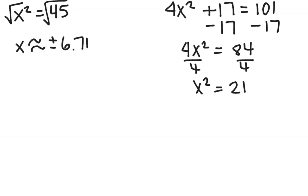And now, like the previous problem, I have the x squared by itself. I can take square root of each side and find that x is approximately equal to plus or minus 4.58.